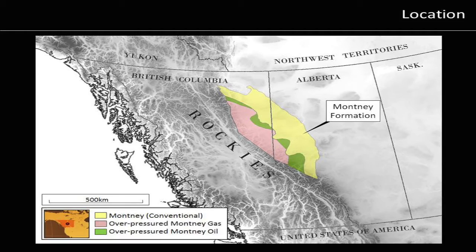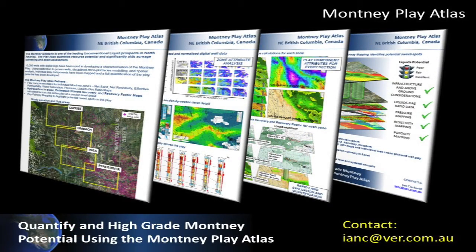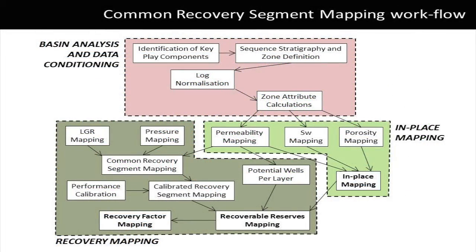The result of the work has been the development of a Montney play atlas which not only maps out individual play elements across the play but also quantifies the play at a section level detail for both in-place and recoverable reserve estimates. We believe the approach can be applied to the exploration and quantification of similar pervasive unconventional systems either in North America or other emerging international plays.